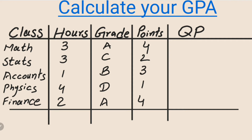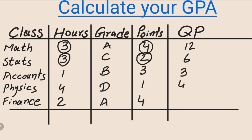The next step is to find the quality points. To get the quality points, we multiply the credit hours with the grade points. So: Math gives 12, Stats gives 6, Accounts gives 3, Physics gives 4, and Finance gives 8.